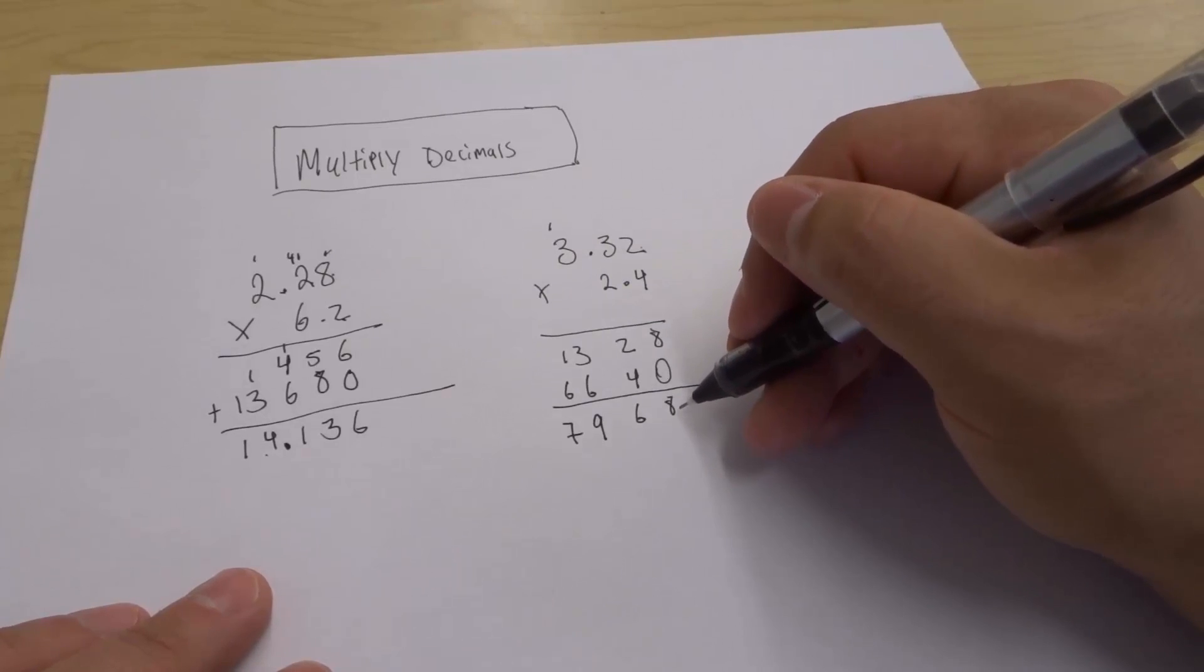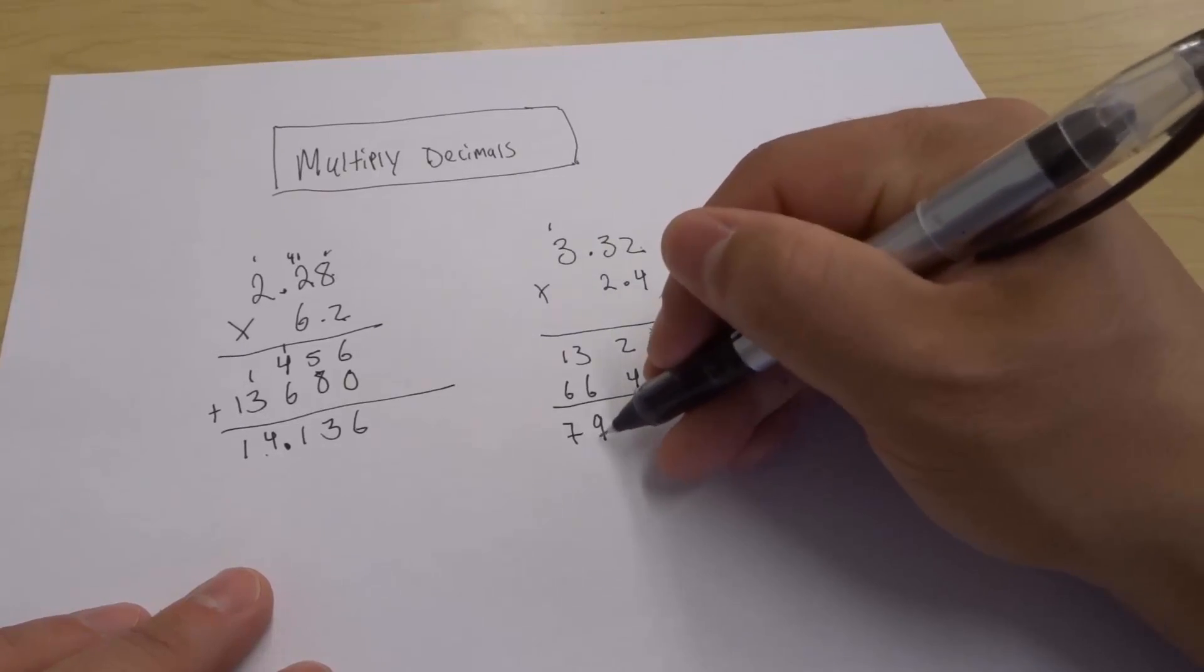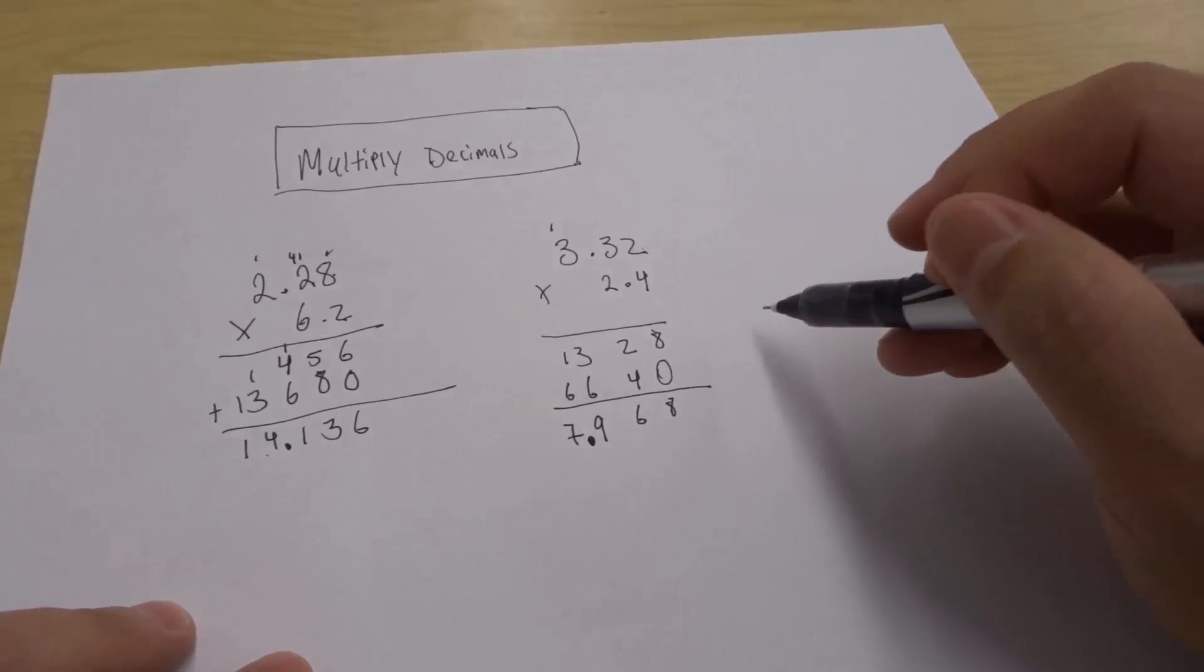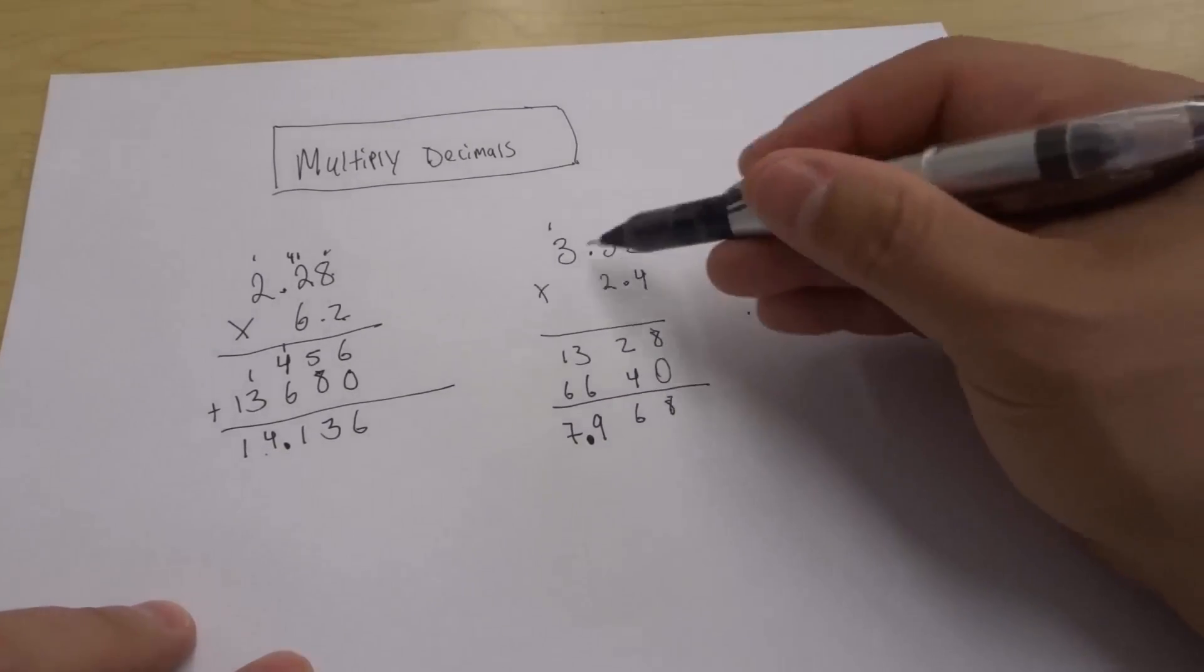We need three numbers to the right of this decimal: 1, 2, 3. Put the decimal right here. Our final answer is 7.968, which obviously makes sense when you look at this number.